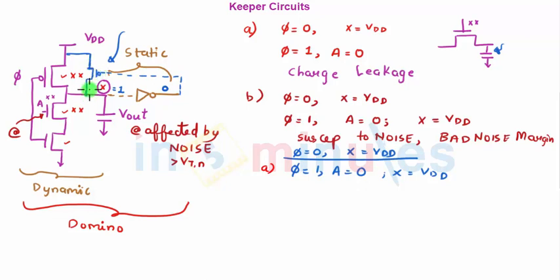So even when phi is equal to 1, because of the keeper circuit, my X will be kept at logic 1 when A is equal to 0. In this case, A is equal to 0, in other cases it means that the pull down transistors are non-functional.